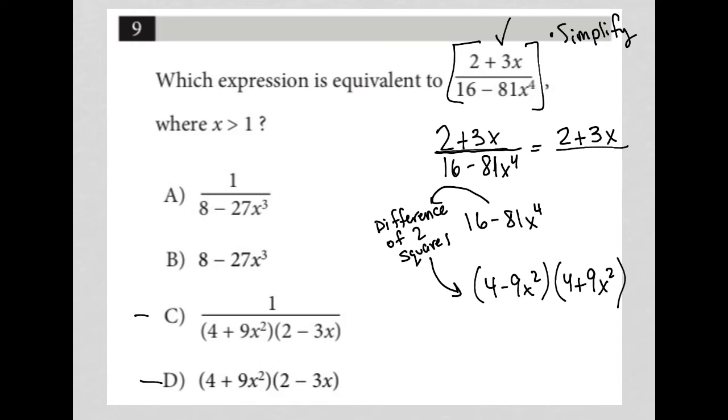Now, I can simplify this even further because this is also the difference of 2 squares. So 4 is a perfect square. 9x squared is also a perfect square. So that becomes 2 minus 3x times 2 plus 3x. And I still, of course, have my 4 plus 9x squared. So my denominator is now 2 minus 3x times 2 plus 3x and 4 plus 9x squared.